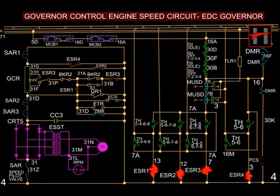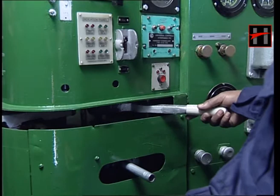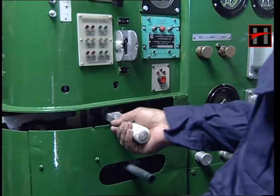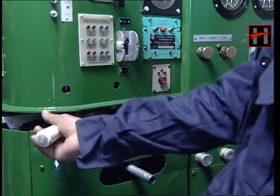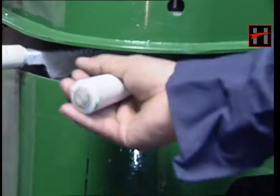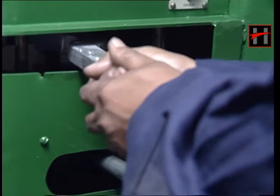This is achieved by moving the throttle handle to different notch positions as required. The speed of the diesel engine can be varied from an idle speed of 400 RPM up to 1000 or 1050 RPM at 8 notches in pre-determined steps.